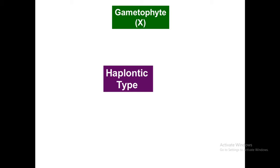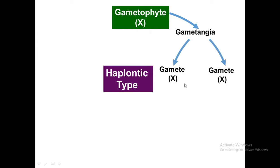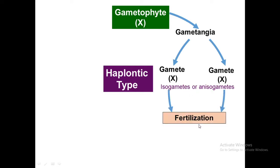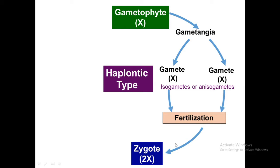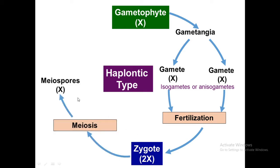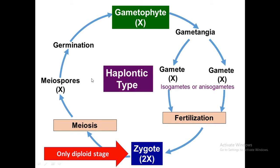A haplontic life cycle starts with the gametophyte, which produces gametangia, and these gametangia produce gametes. These gametes may be isogametes or anisogametes. After fertilization, they give rise to a diploid zygote. Immediately, meiosis occurs in the zygote to form meiospores. These meiospores germinate and give rise to the gametophyte. During this entire life cycle, the zygote is the only stage where a diploid condition can be observed.